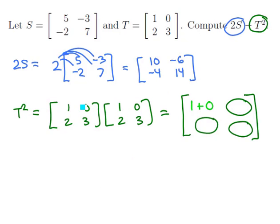This next element, this is the element in the first row second column, we're going to get by taking the first row of T, the second column of T, and dotting them together. That's going to get us 1 dotted against 0, or 1 times 0, plus 0 times 3.